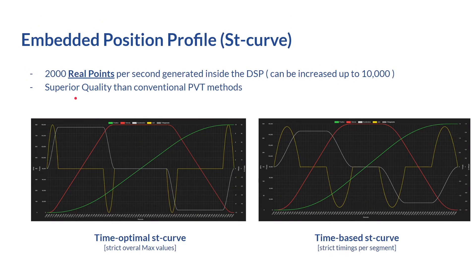In SOLO, we offer two different types of ST curves. The first is the time-optimal ST curve, which is defined based on overall maximum values — for instance, maximum speed, maximum takeoff acceleration, landing acceleration, maximum takeoff jerk, and maximum landing jerk. On the other side, you have the time-based ST curve, where you define the timings of each segment. If you care strictly about timings, use the time-based version. If you want more intuitive control focused on max values, use the time-optimal version.